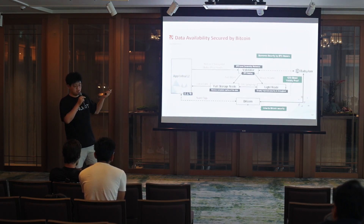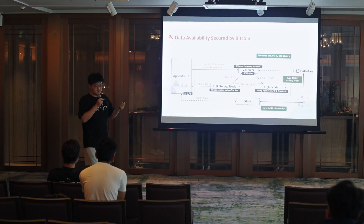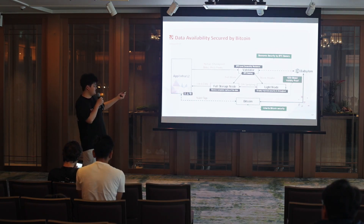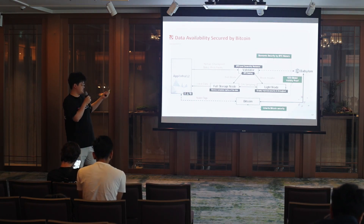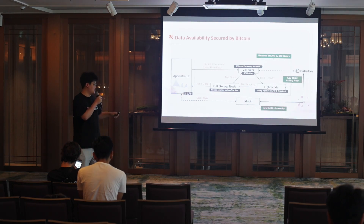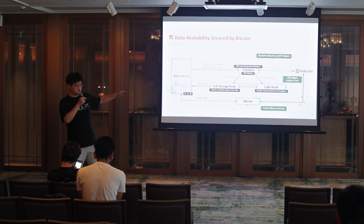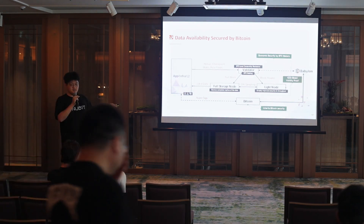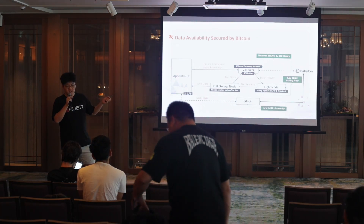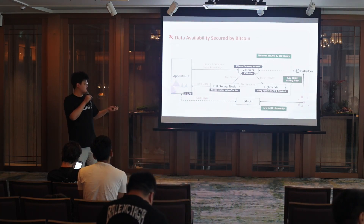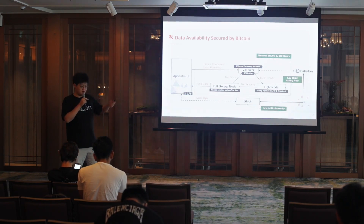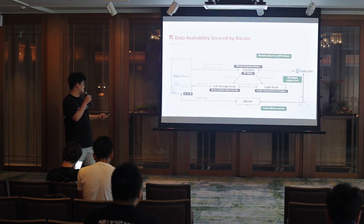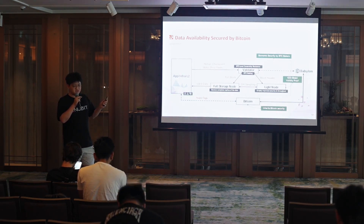Getting into technical details — the first is our DA layer, which is secured by Bitcoin. It has three major components. The first is the validator, which uses Bitcoin staking thanks to Babylon, and uses a high-performance consensus algorithm to achieve a similar level of Bitcoin censorship resistance. For the DA part, we have full server nodes and light nodes. The full server node stores a complete replica of all data published to Bitcoin, while the light node periodically performs DA sampling with full server nodes to ensure data availability.